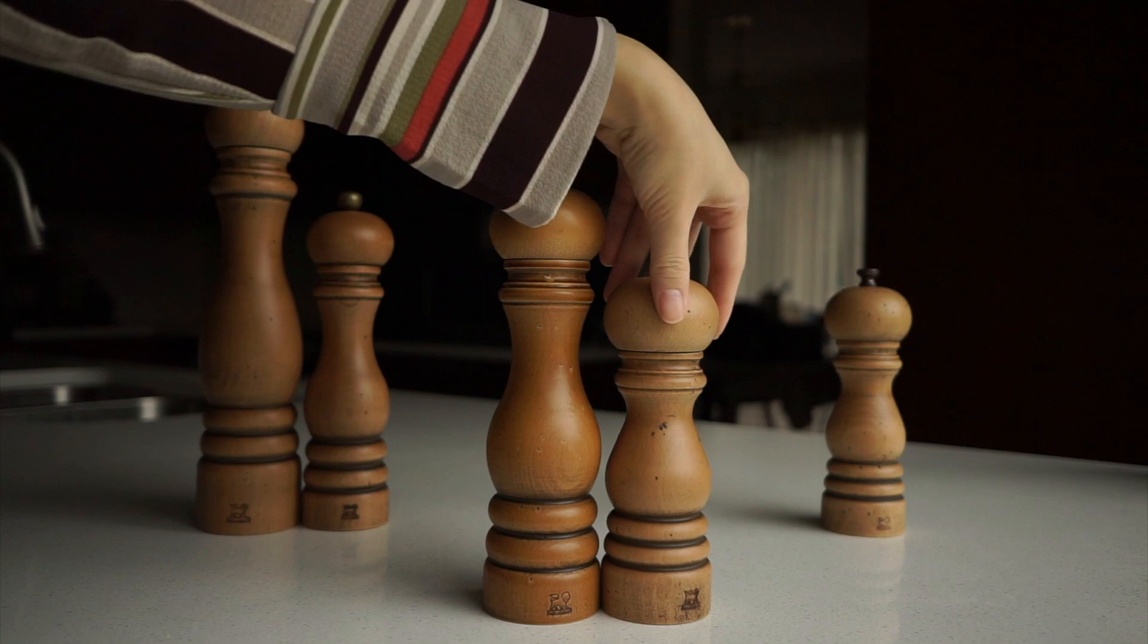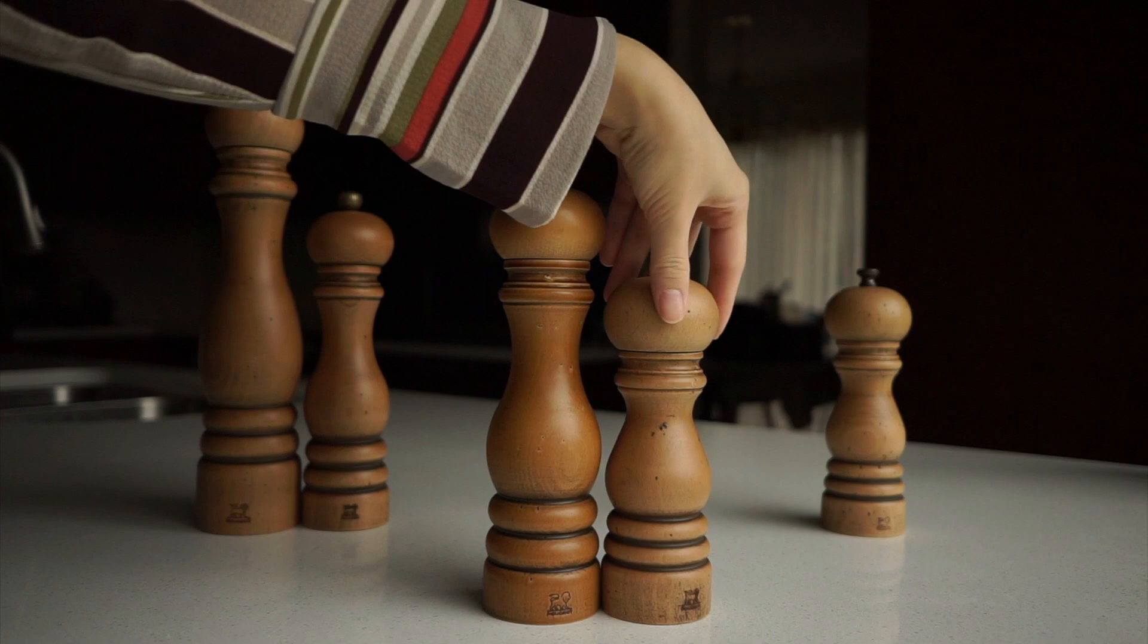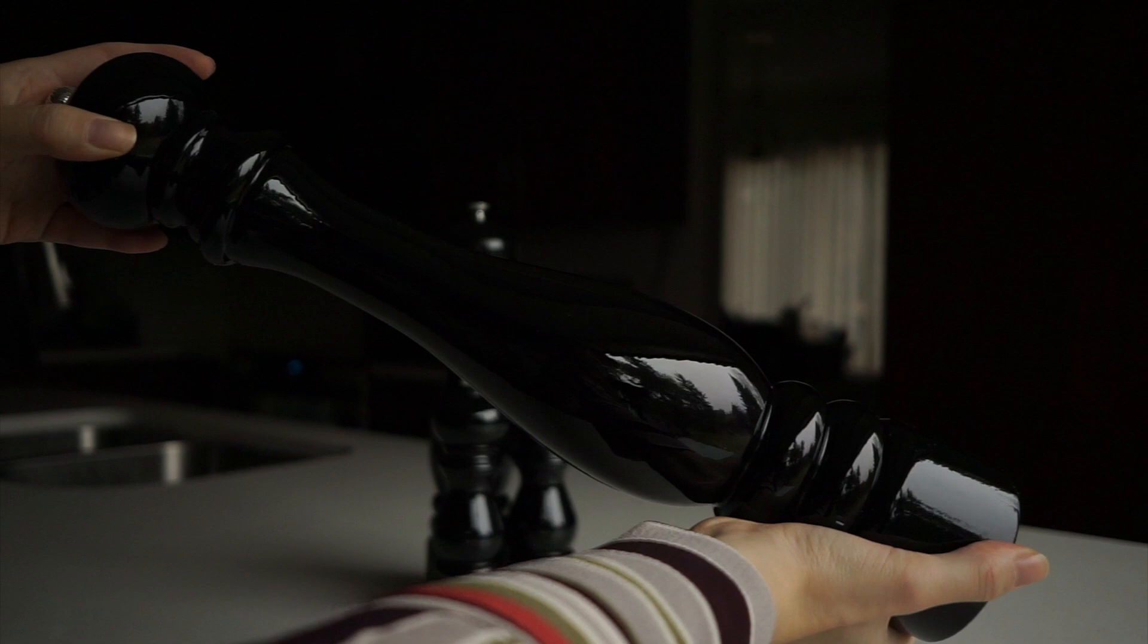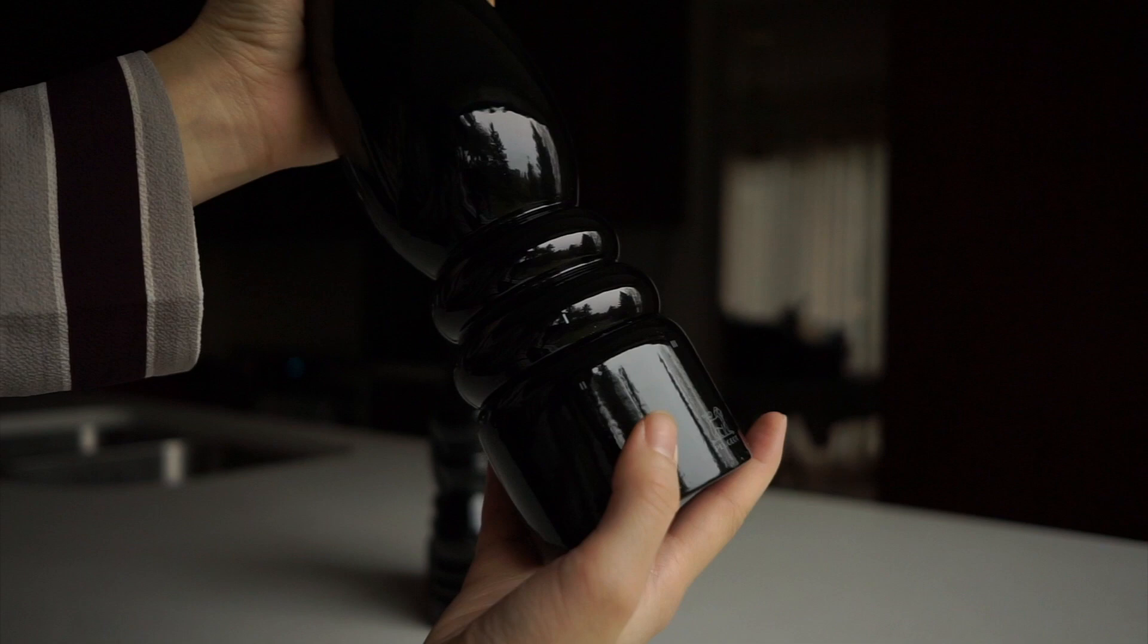If you want your salt and pepper mills to hearken back to the times of Peugeot's inception back in the early 1800s, the antique collection is where it's at. These are antique brown and offered in a standard 18 centimeter salt and pepper as well as larger sizes like a 22 and 30 centimeter.